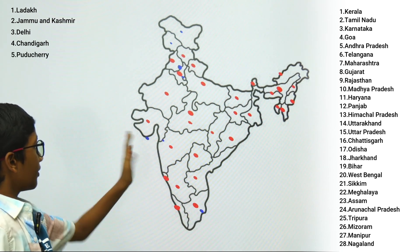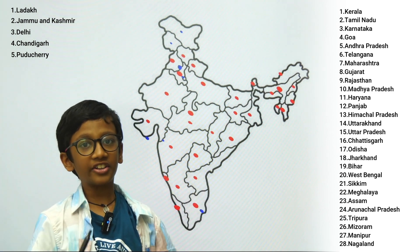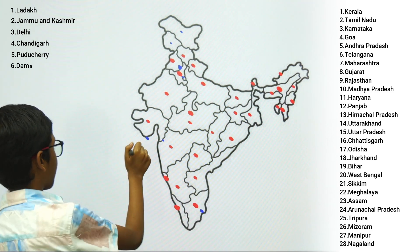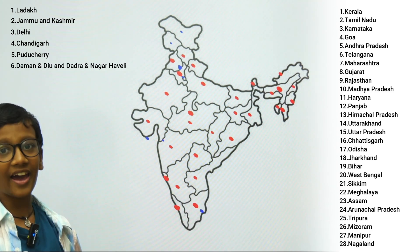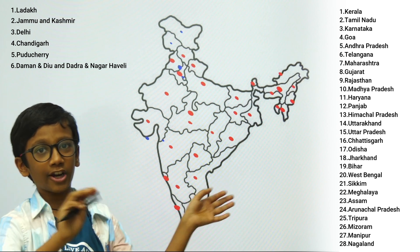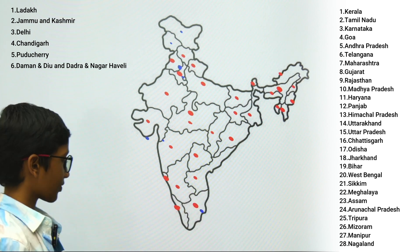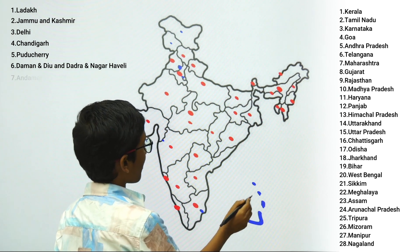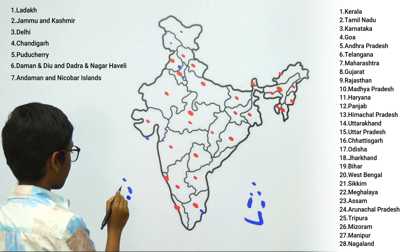These both are together one union territory: Daman and Diu. And this is Dadra and Nagar Haveli — both are one territory. Andaman and Nicobar Islands. Lakshadweep Islands. Thank you.